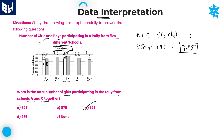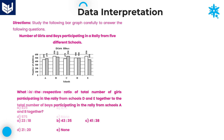Option C is the right answer for question 1. Second question: What is the respective ratio of the total number of girls participating from schools D and E together to the total number of boys participating from schools A and B together?